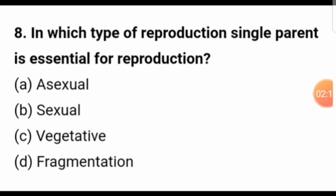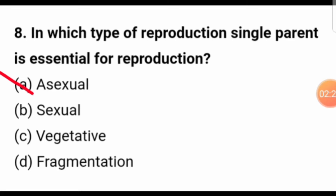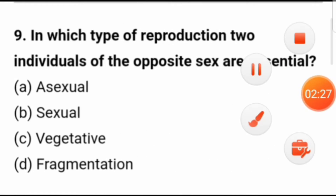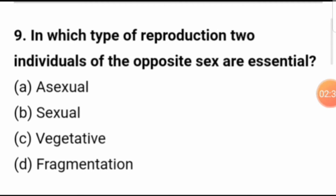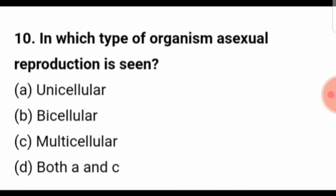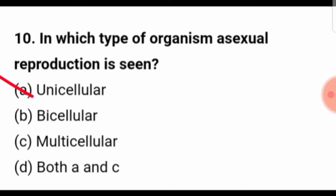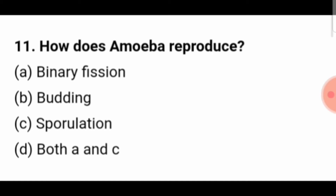In which type of reproduction is a single parent essential? Of course, asexual reproduction requires a single parent. And in which type of reproduction are two individuals of the opposite sex essential? That is sexual reproduction. In which type of organism is asexual reproduction seen? Asexual reproduction is seen in unicellular as well as multicellular organisms, so both A and C is the right answer.